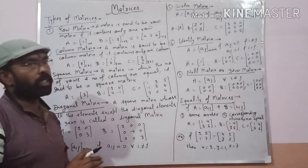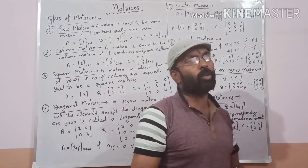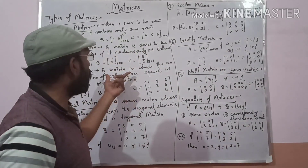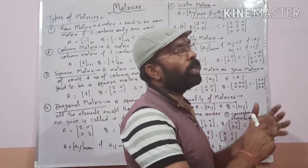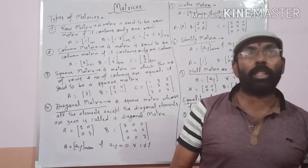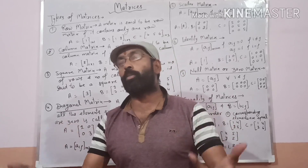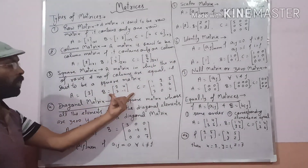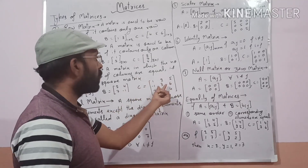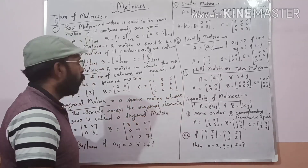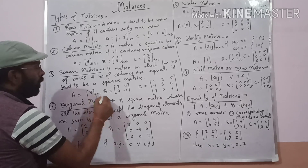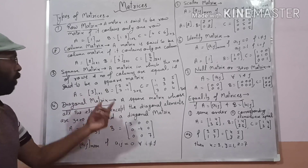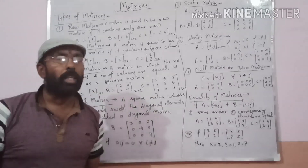Next is the square matrix. A matrix is said to be a square matrix in which the number of rows and number of columns are equal. For example, matrices of orders 1 by 1, 2 by 2, and 3 by 3 are all square matrices.